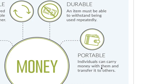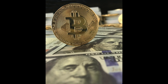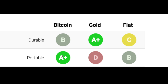Next up is portability — individuals can carry money with them and transfer it to others. Bitcoin takes the cake in this category, getting an A plus. It's really easy to store on your phone, in cold storage, or on a computer, and you can carry large amounts in a very small device. Gold is the exact opposite — this is one of the main areas gold falters, as it's very cumbersome to carry for large purchases like a home. Fiat gets a B, middle of the road.